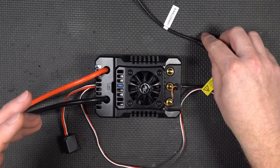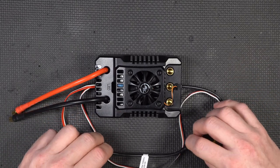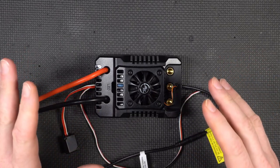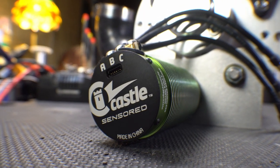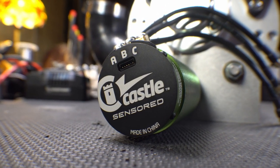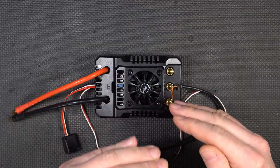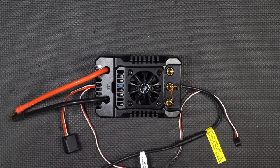Now basically the difference between running censored versus sensorless is only applicable to low speed operation. What a censored motor is, is it's a motor that has hall effect sensors that tell the ESC exactly what position the rotor is in so the ESC knows which phase coils to fire to get the motor moving.